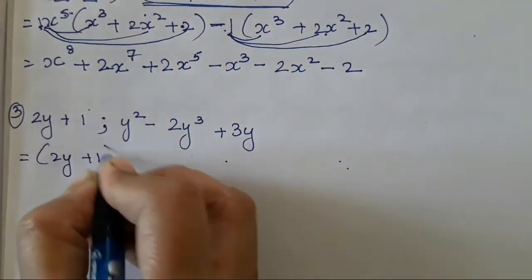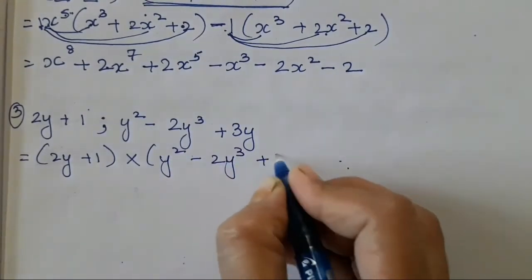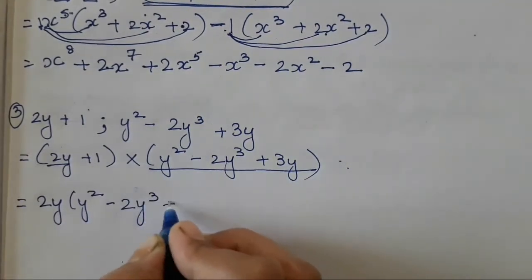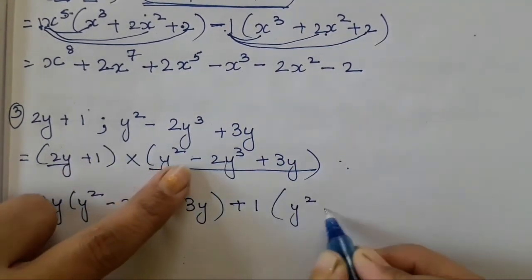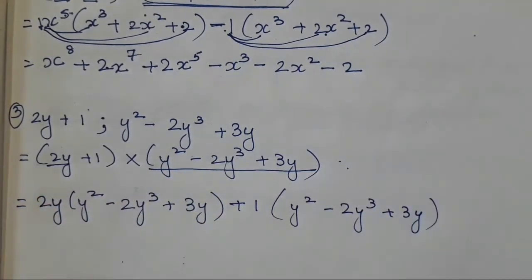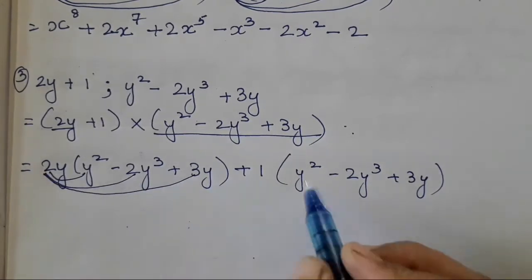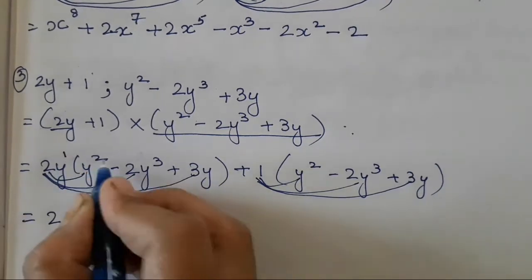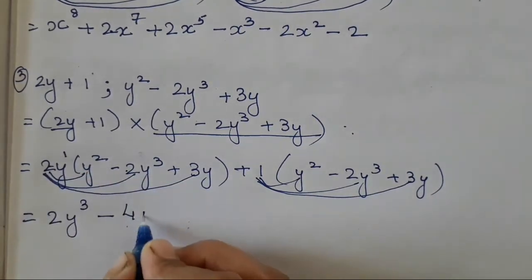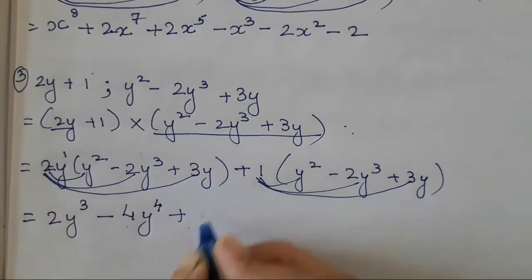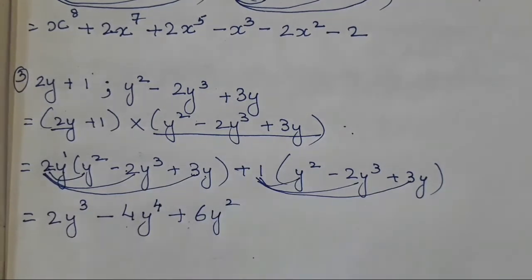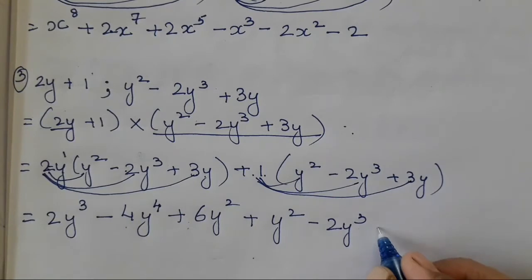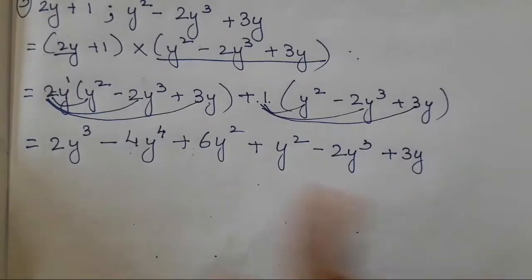Same steps: 2y plus 1 multiplied with y² minus 2y³ plus 3y. First term — multiply 2y with the complete bracket: y² minus 2y³ plus 3y. Then plus 1 into y² minus 2y³ plus 3y. Multiply: it is going to be 2y³ — 1 is there, so 1 plus 2 is 3 — then 2 twos are 4, so 4y⁴. Then 2 threes are 6 and y into y is y², so plus 6y². Then 1 into y² is y², 1 into minus 2y³ is minus 2y³, 1 into 3y is plus 3y. Multiplying by 1 is very easy — just remember the first term.